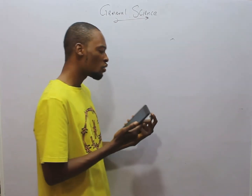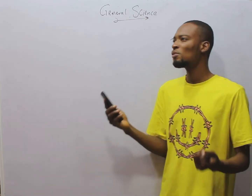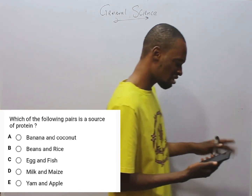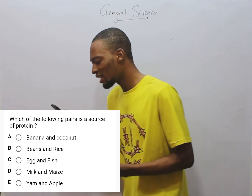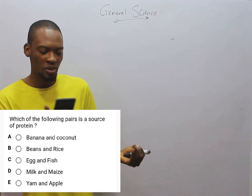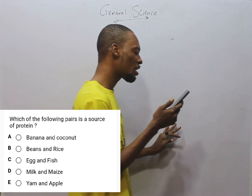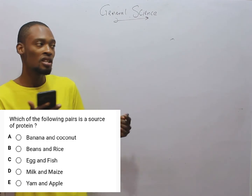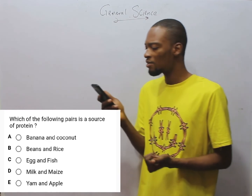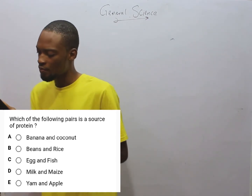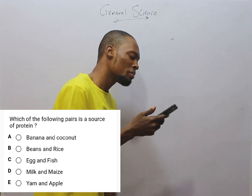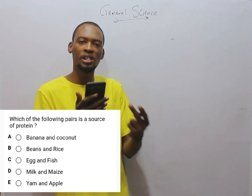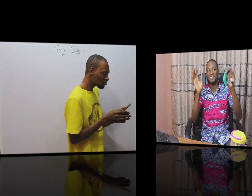The next question asks which of the following pairs is a source of protein — meaning both items in the pair must be protein. Option A: banana and coconut. Option B: rice and beans. Option C: egg and fish. Option D: milk and maize. Option E: yam and apple. In option E, yam is a carbohydrate and apple provides vitamins. Maize is carbohydrate, so option D is not a protein pair. In option B, rice is carbohydrate. Option A doesn't make a protein pair either. Egg and fish are both sources of protein, so option C is the correct answer.